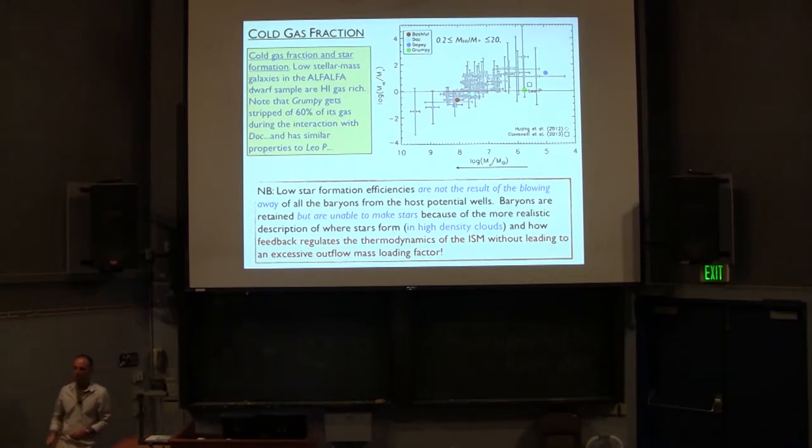Let's look at the cold gas fraction. This is just to show you the number of information that is out there. This is MH1 versus stellar mass from the ALFALFA survey. This is a paper by Huang et al in 2012. Here you have Leo P, which is a recent system found in this survey, has got a high H1 content, very small stellar content, and very small metallicities. Our four dwarfs, in fact, are lining up there. And one issue that is important to stress is that the low star formation efficiency clearly are not the results of blowing away all the baryons from the host potential. Well, these are gas-rich systems. As you can see, these two systems, Dopey and Grumpy, have typical MH1 over M stars that exceed one.